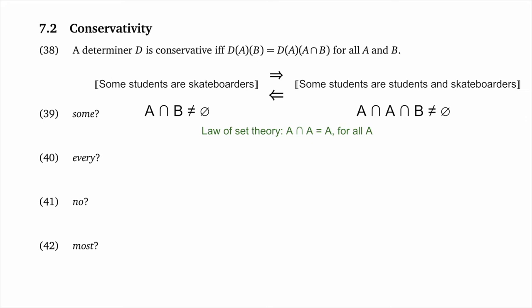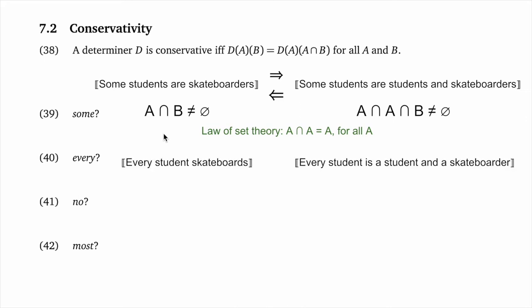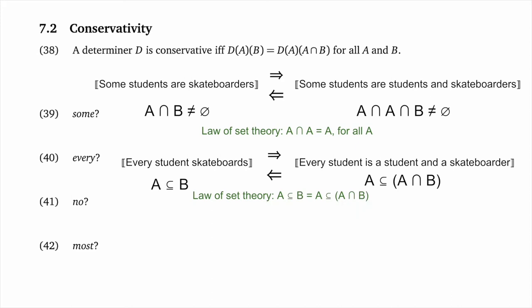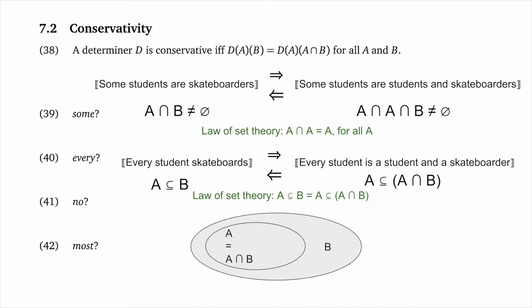For every, it's the same story — every is conservative, though maybe less obvious. 'Every student skateboards' and 'every student is a student and a skateboarder' seem clearly identical. The formal theory makes this clear: the relation on the left is A subset B, and on the right it's A subset (A intersect B). These are equivalent by a law of set theory: if A is contained in B, then A is identical to A intersect B. And conversely, if A is a subset of A intersect B, then it's contained within B.